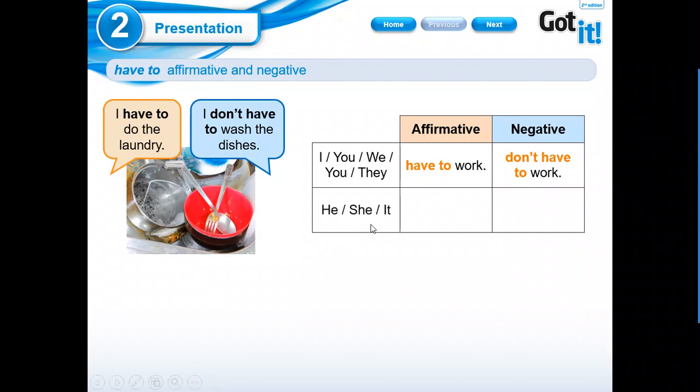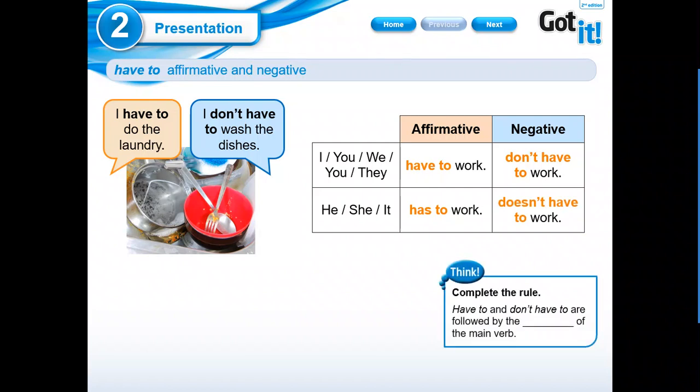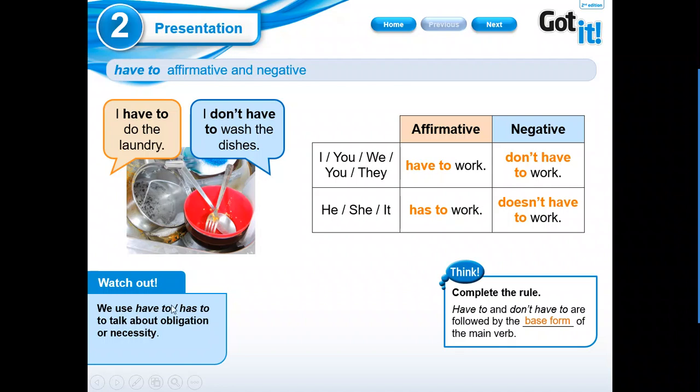Now with he, she, and it, we have to use 'has to'. Do you remember that? Has to work. And in the negative form we're going to use he, she, or it doesn't have to. Super, very good. So now we're going to complete this rule. 'Have to' and 'don't have to' are followed by the base form of the main verb. We said it before. Watch out, we use 'have to' and 'has to' to talk about obligation or necessity.